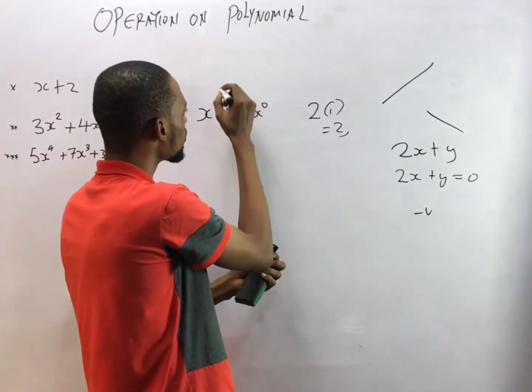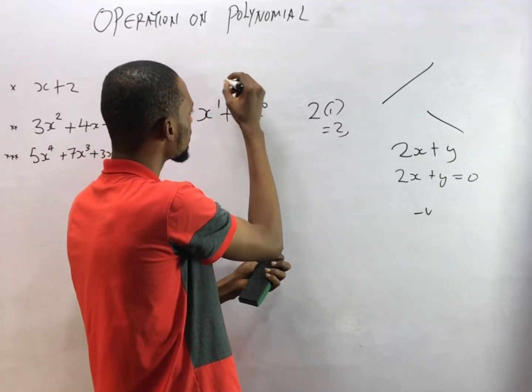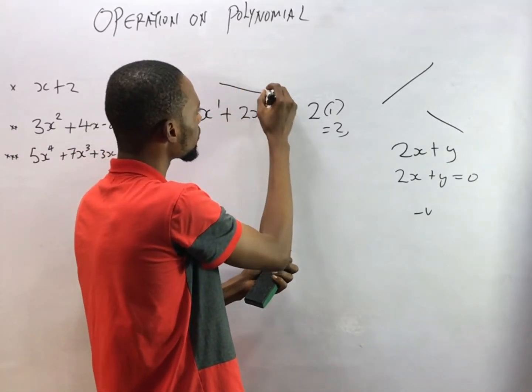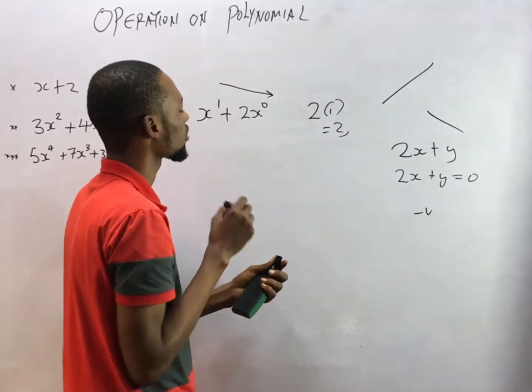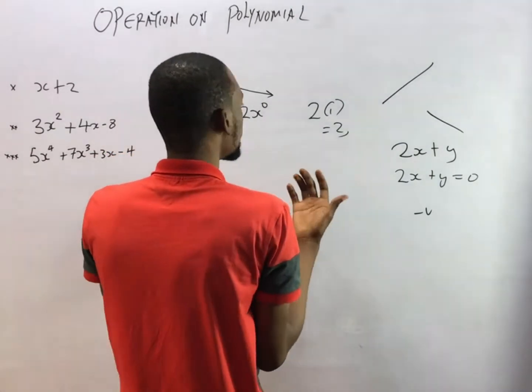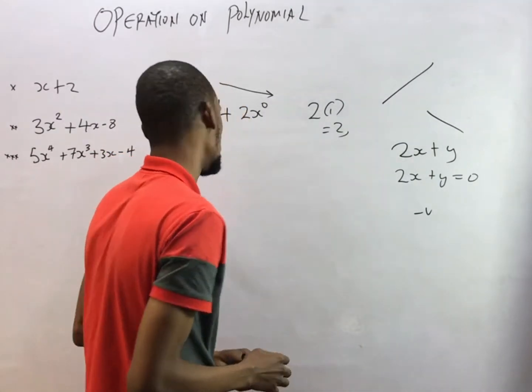Look at the powers of the variables: this is 1, and this is 0. So it's descending — 1, 0. So this is a polynomial.